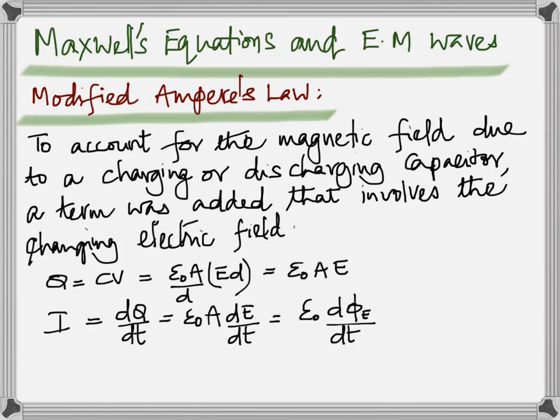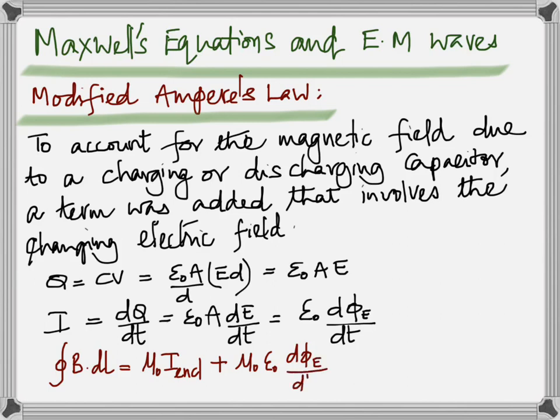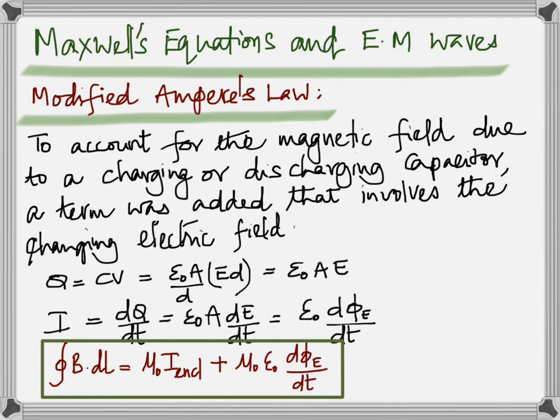So ε₀ dΦ_E/dt is the new term Maxwell brought in. With the addition of that term, the modified Ampere's law becomes: closed line integral of B dot dl equals μ₀I_enclosed plus ε₀ dΦ_E/dt. This shows that a changing electric field with time can also produce a magnetic field — so there are two components: current and a changing electric field.